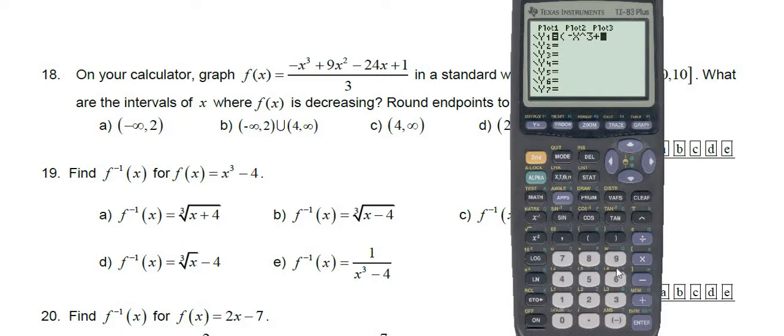And the rest of it, so plus 9, and then variable key, exponent key, 2, and then minus 24x plus 1, parentheses, all divided by 3. I did that kind of fast.